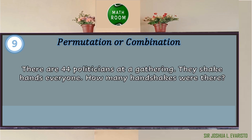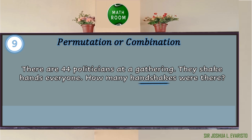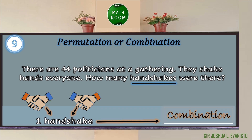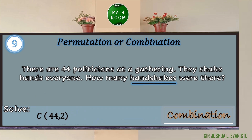Item 9: There are 44 politicians at a gathering. They shake hands with everyone. How many handshakes were there? This item does not have any keywords, so we visualize the question. Imagine politician A shakes hands with politician B — does it make any difference if politician B shakes hands with politician A? No, because that's just one handshake. Therefore, order does not matter, and this is a combination problem: C(44, 2), since we have 44 politicians and every handshake involves 2 people.